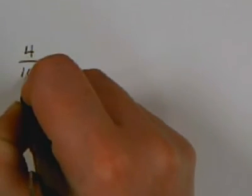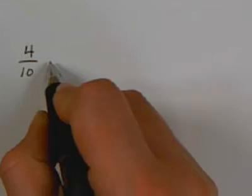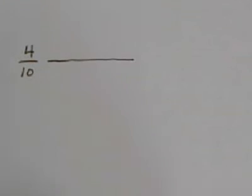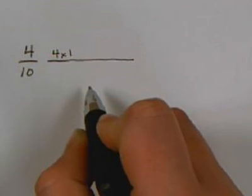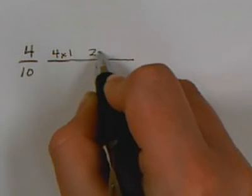If I have the fraction 4 tenths and I need it to be simplified, the first question I ask is which number in the fraction is the smallest. 4 is smaller than 10, so 4 is the number I need to start with. I draw a bar out to the side and I begin listing my factors for 4. Factors are the numbers that we multiply to get the answer 4. So one factor for 4 is 4 times 1. The other factor for 4 is 2 times 2.